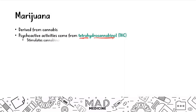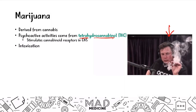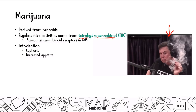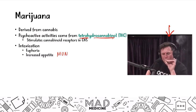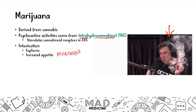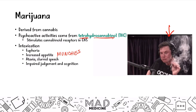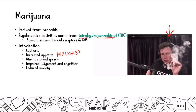THC stimulates cannabinoid receptors in the CNS — your brain is essentially wired to respond to it. Intoxicating effects include euphoria, increased hunger (the munchies), ataxia, slurred speech, impaired judgment and cognition, as well as reduced anxiety. A lot of people use it off-label for anxiety.